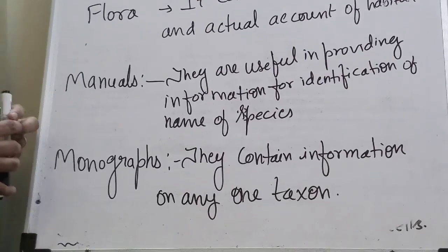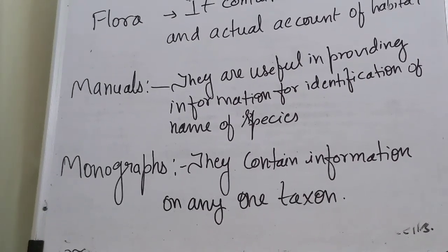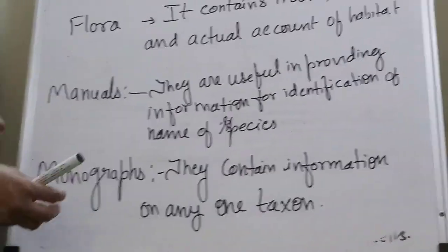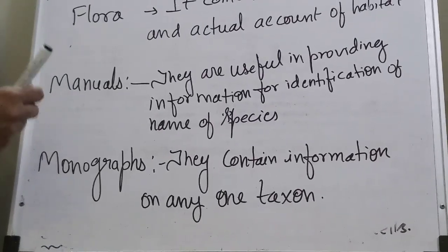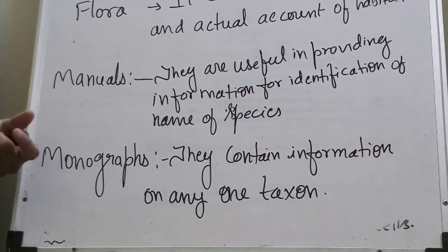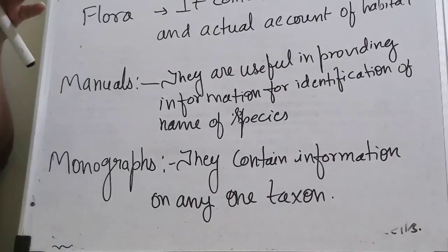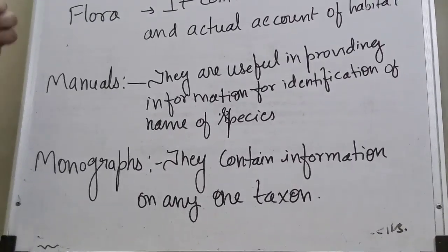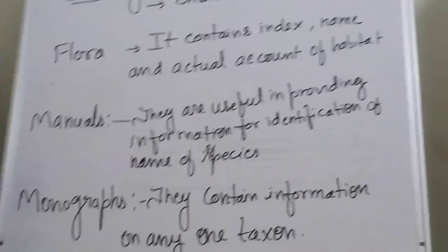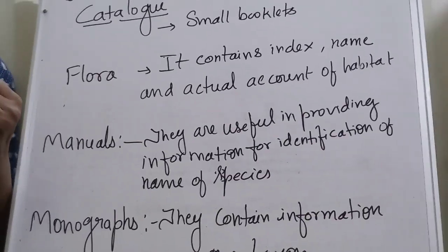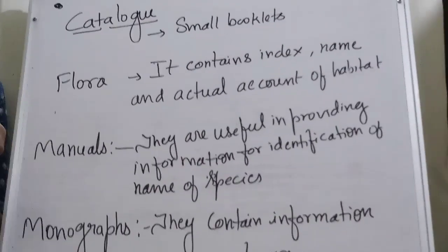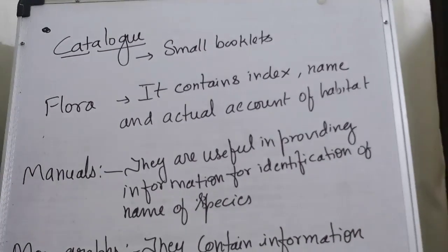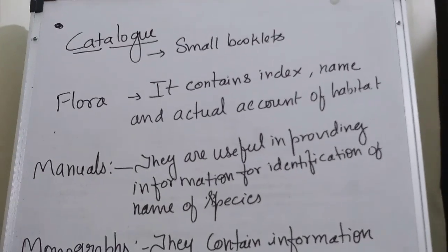Monographs contain certain information about any one taxon with pictures. There are images and pictures. With that we can add their features — similar and dissimilar features. We can make a group and that taxon helps to get information. So monographs provide detailed information about a single taxon supported by images.